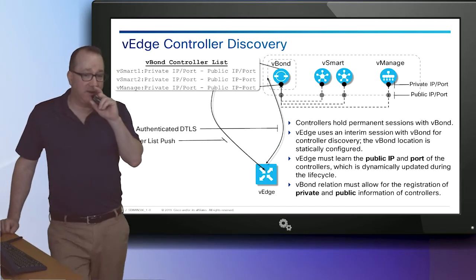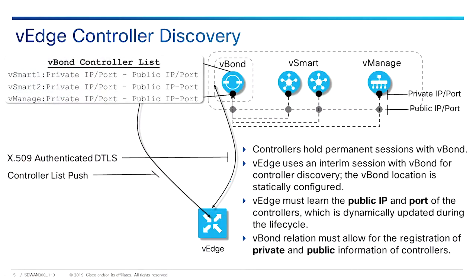The only component that has to have a public IP is the V-Bond. It has to be able to communicate with both the V-Smart and all the V-Edge devices, even if they're behind NAT. The purpose of the V-Bond is to authenticate the V-Smart controller and the V-Edge routers and coordinate their connectivity. Each V-Bond has a persistent control plane connection in the form of a DTLS tunnel, and each V-Smart controller has a temporary DTLS connection to each V-Edge when it comes online. The V-Edge boots up, finds its V-Bond, then gets a list of V-Smarts to connect to — super easy, barely an inconvenience.